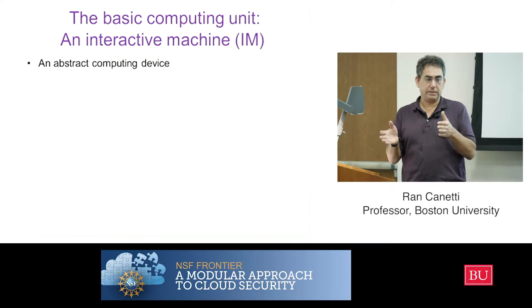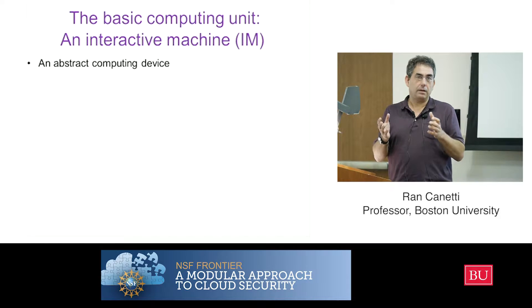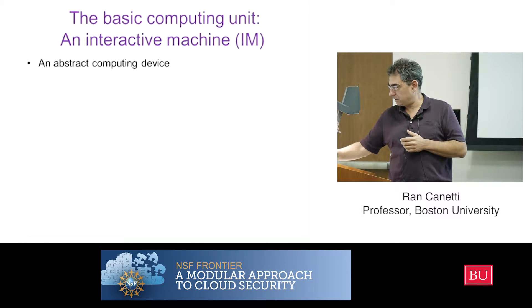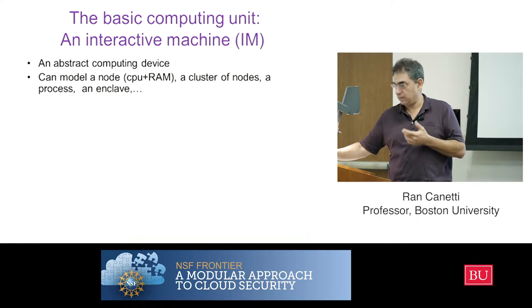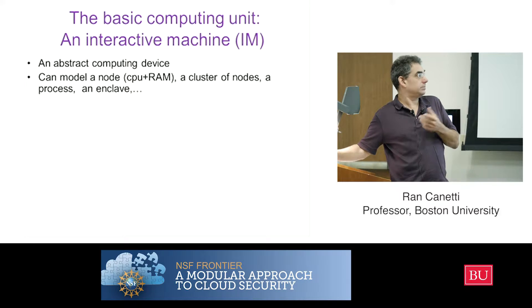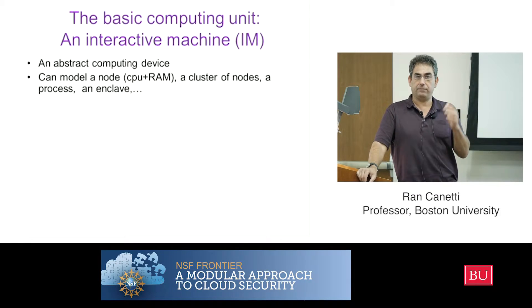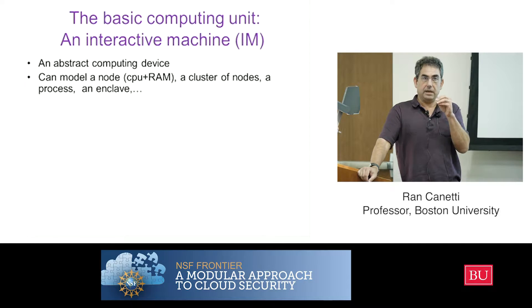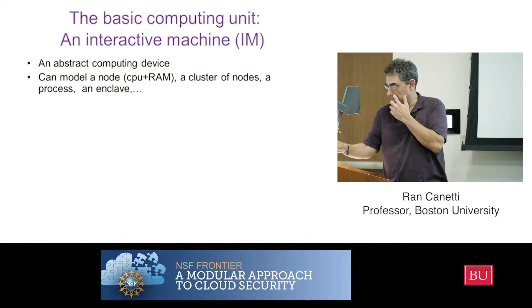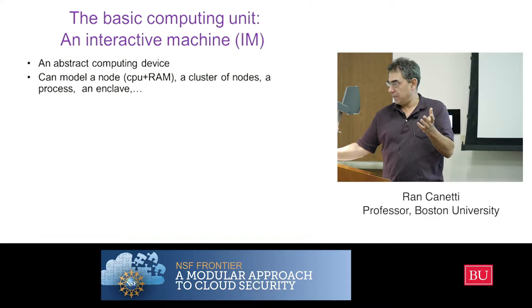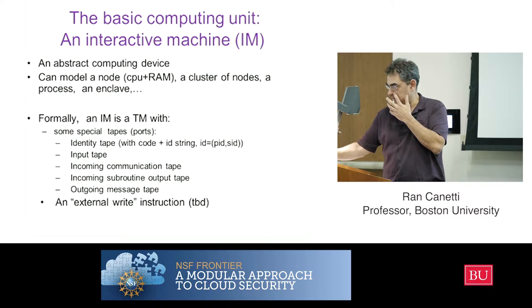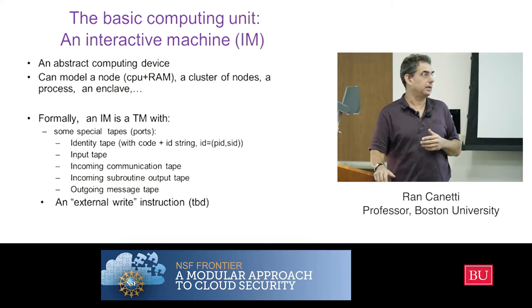So we start with the basic computing unit, which is something that does some computation. It's going to be some abstract computing device without getting into too much detail, because that's not going to be important for us. We want to model something which is kind of flexible. On the one hand, it'll be a one-to-one modeling of a node — a CPU plus RAM or some other memory — or it can also be a cluster of nodes, a process, an enclave within a processor, et cetera. We want to be able to capture all of these things in the same way.